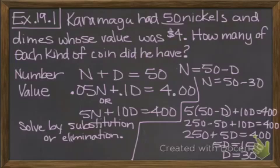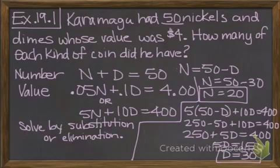N is going to equal 50 minus 30. N equals 50 minus d so n is equal to 50 minus 30 or in other words n equals 20. The number of nickels is 20. The number of dimes is 30.